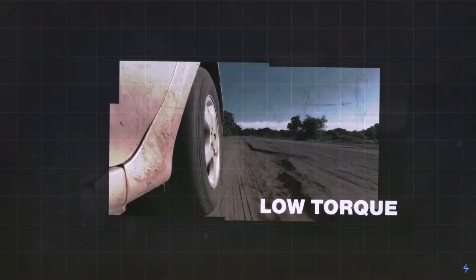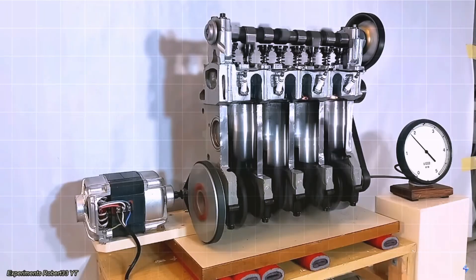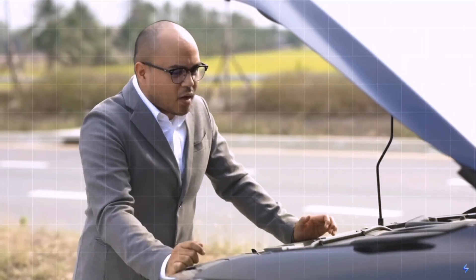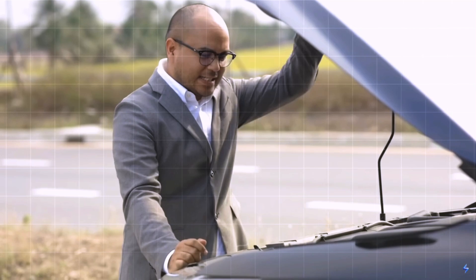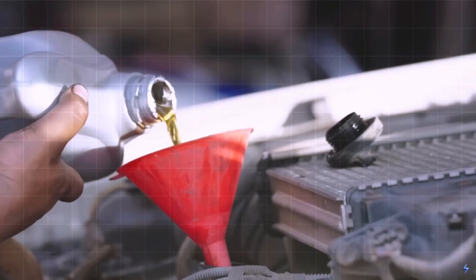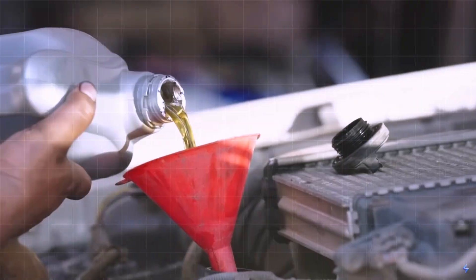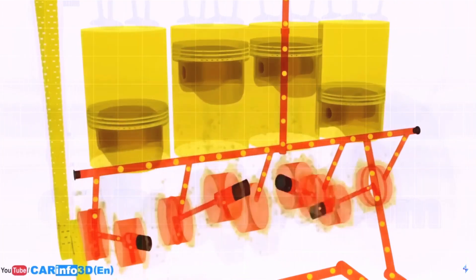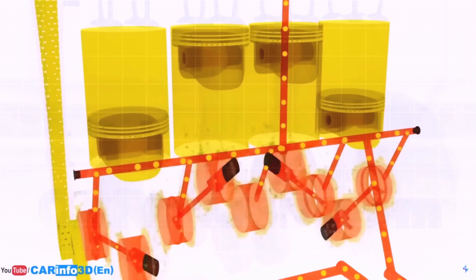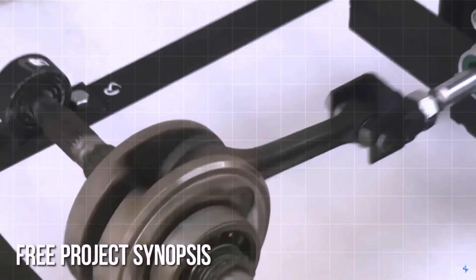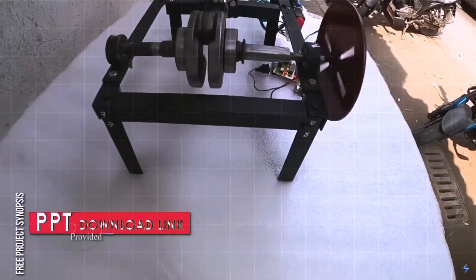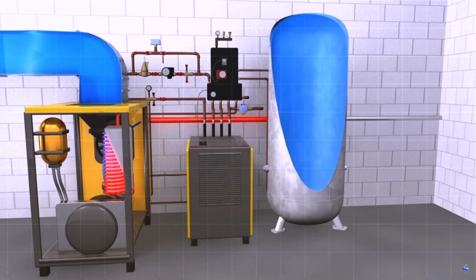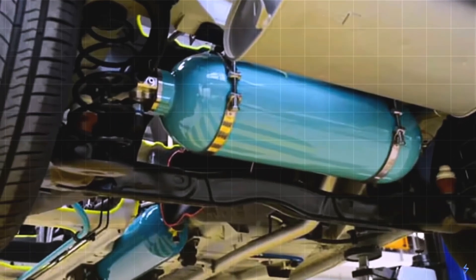But the biggest challenge that compressed air engines face is their inefficiency. While this might sound insignificant considering compressed air is virtually free, it's actually a major hurdle. Most prototype compressed air vehicles developed have had extremely limited ranges, making them impractical for everyday use. This is because the energy required to compress the air is often greater than the energy released when the air expands in the engine. Additionally, the tanks needed to store the compressed air are bulky and heavy, further limiting the practicality of these vehicles.